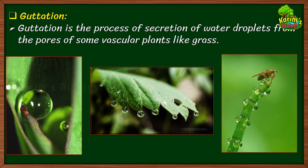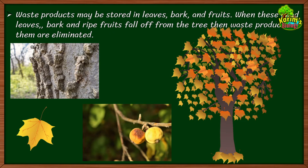The second process is guttation. In this process, water is secreted from the leaves in liquid state, not as vapor. The excessive water is secreted from the edges of the leaves as water droplets through pores connected to the xylem. This usually occurs in grass — you would have observed water droplets at the tips of grass leaves.